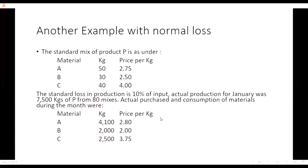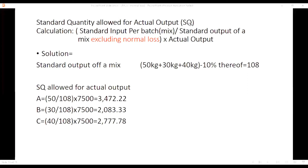We know there are formulas for material variances: material cost variance, material price variance, material quantity variance, material mix variance, and material yield variance. To calculate these variances we need computations: standard quantity allowed for actual output and revised standard quantity, that is actual quantity using standard formula. To calculate standard quantity for actual output, there is an impact of normal loss. The formula is standard input per batch divided by standard output of a mix excluding normal loss, multiplied by actual output.